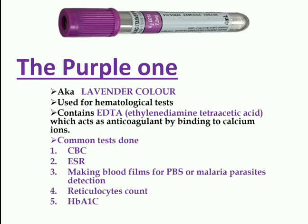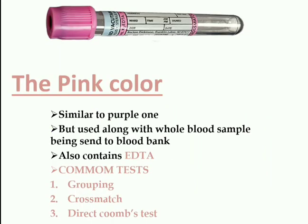The first one is the purple one, also known as the lavender color. These are used for hematological tests and contain EDTA — ethylenediamine tetraacetic acid — which acts as an anticoagulant by binding to calcium ions. Common tests include CBC, ESR, blood films for PBS, detection of malarial parasites, reticulocyte count, and HbA1C.